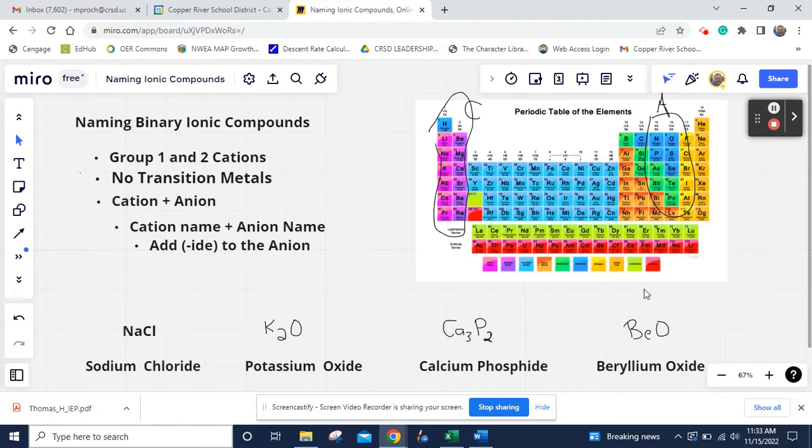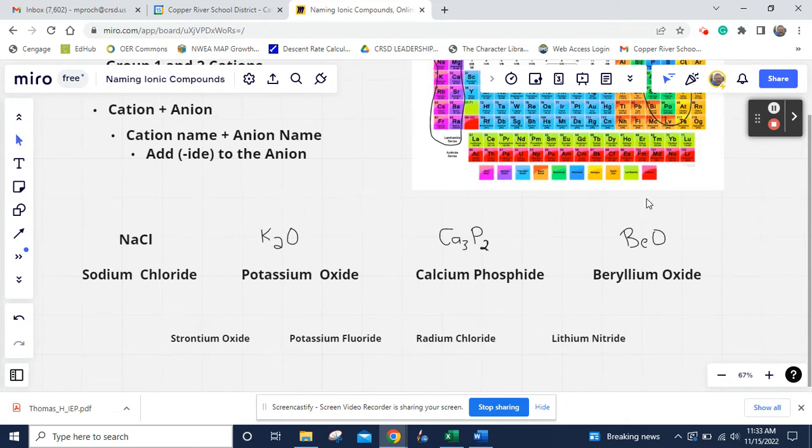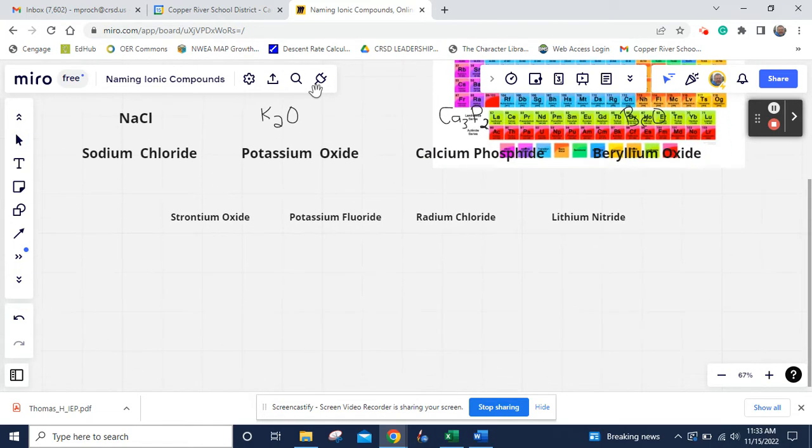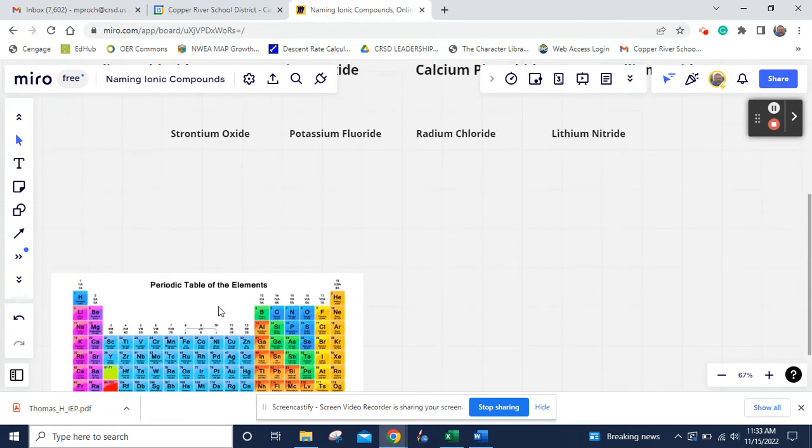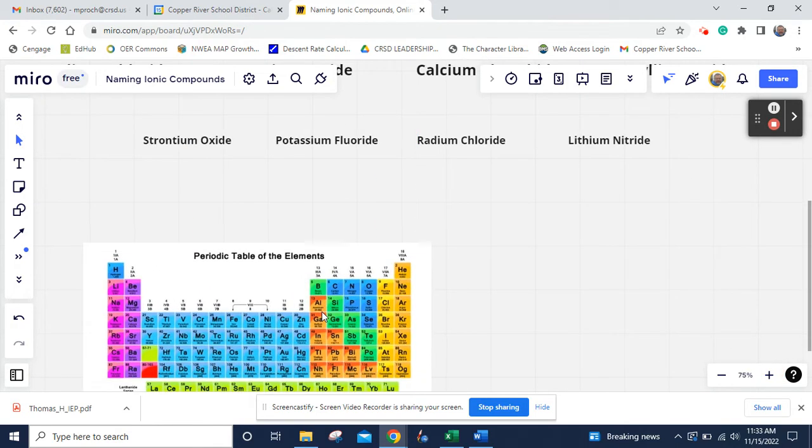But let's look at something a little bit different then. Sometimes we're not always going to have the formula. Sometimes we might have the name. And then how do we take that name and then transfer that into a formula? So let's go the other way. Here we have the name. We know it's a binary because it doesn't have any prefixes. It does have a suffix IDE, but no prefixes. So we know this is a binary ionic compound.